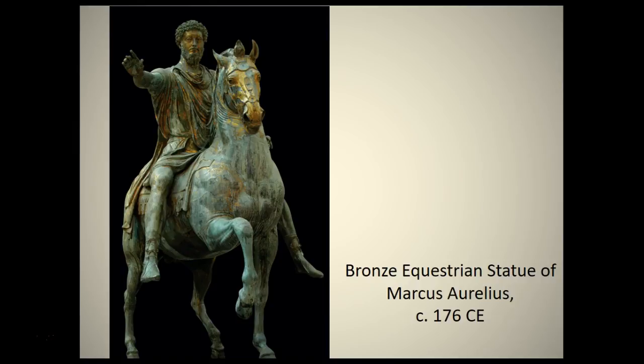I'm showing this to you because it's not on your official list but we will confront the motif of equestrian statues again — so this is one of the first ones to reference back to when we encounter other equestrian statues or portraits and paintings. Marcus Aurelius is historically significant because he broke from the system of grooming competent non-blood successors and left the empire to his son Commodus, who managed to destroy the empire within 12 years. He was a horrible emperor and the Roman Empire starts its decline after the reign of Marcus Aurelius.